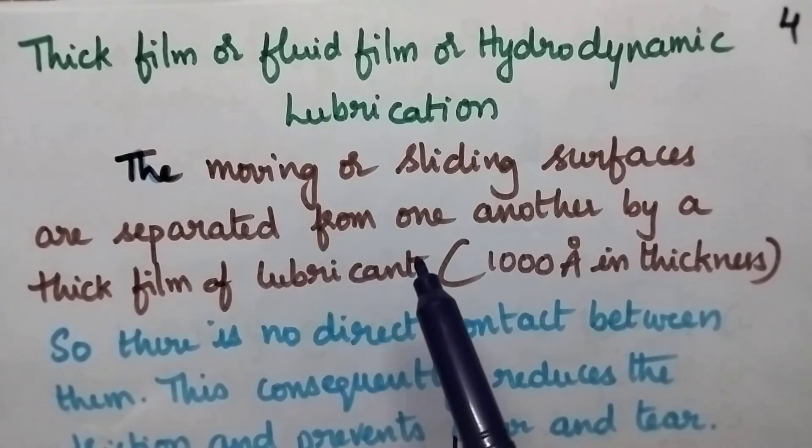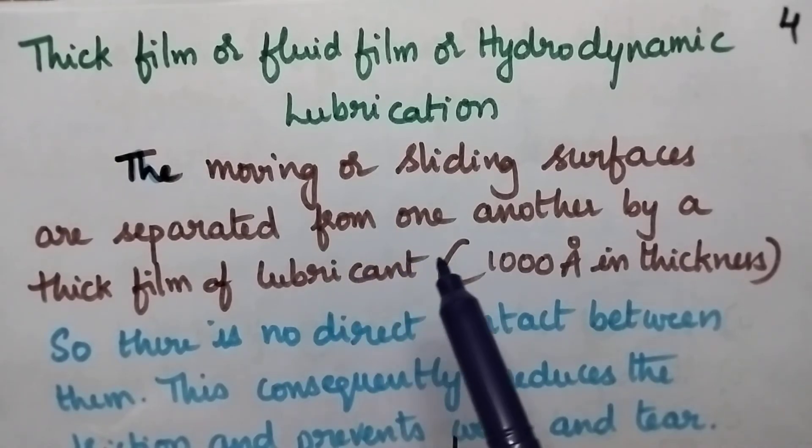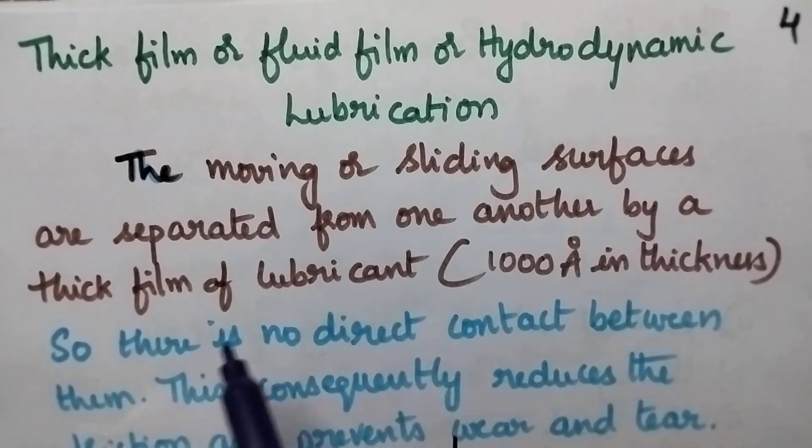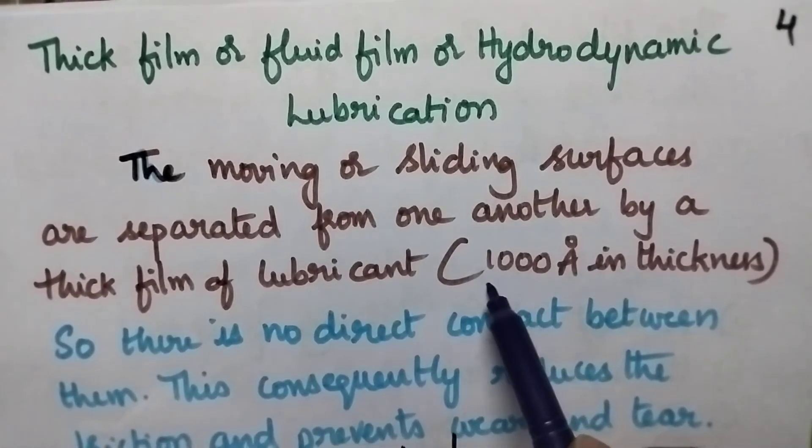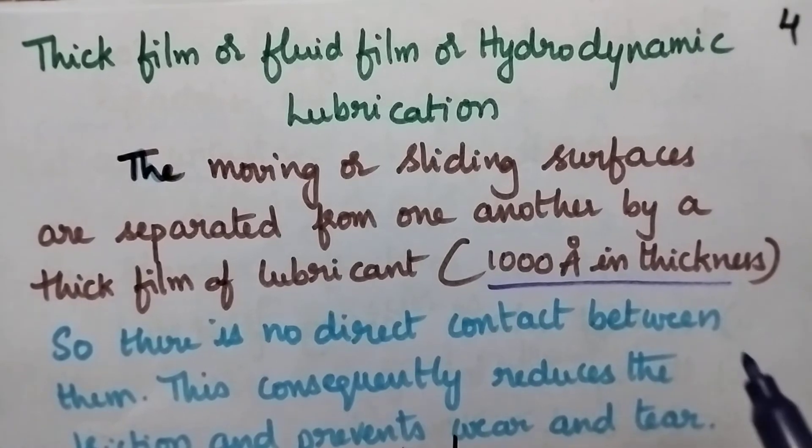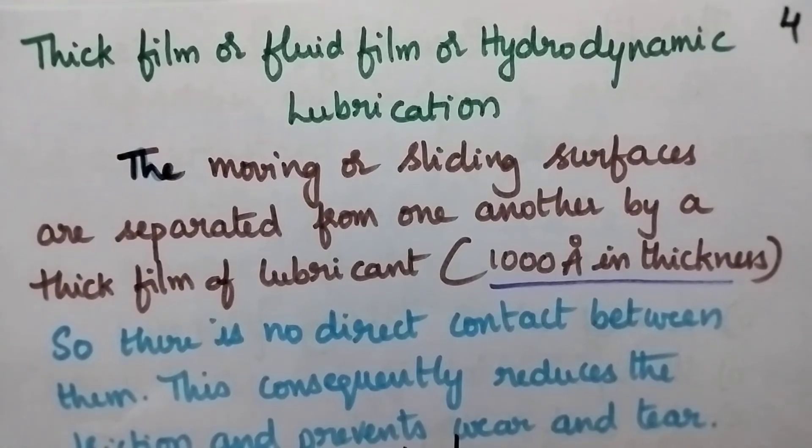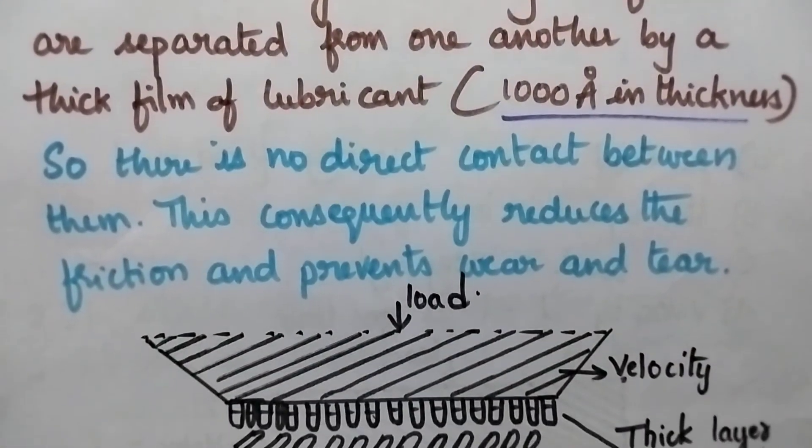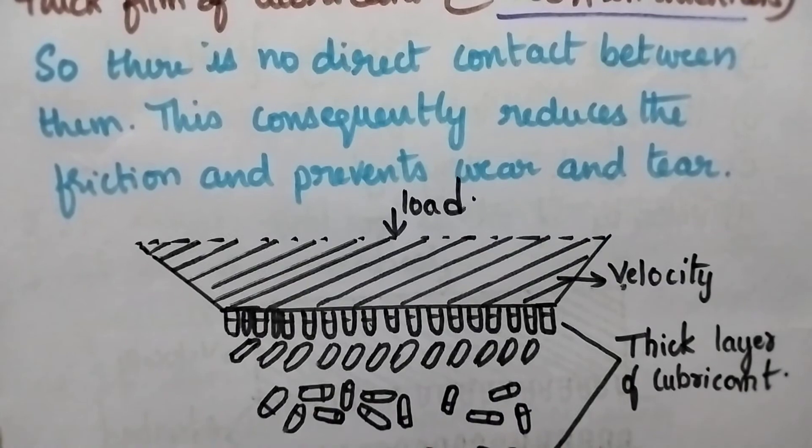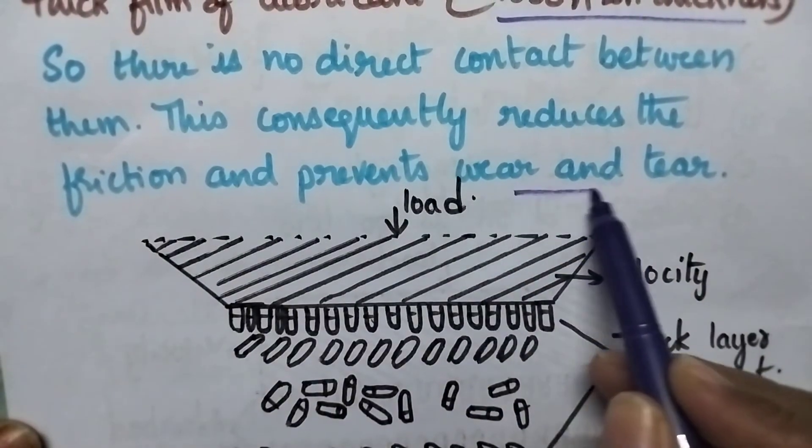The moving or sliding surfaces are separated from one another by a thick film lubrication. That means here the thickness of the lubricating oil will be around 1000 angstrom units, in such a way that there is no direct contact between the metal surfaces. As a result, it reduces the friction and prevents the wear and tear.